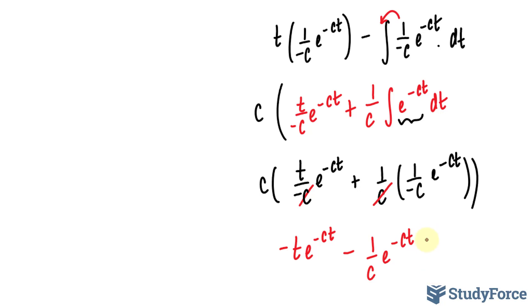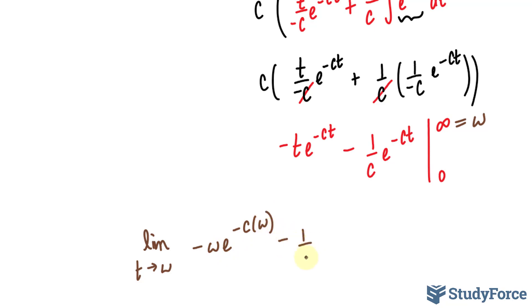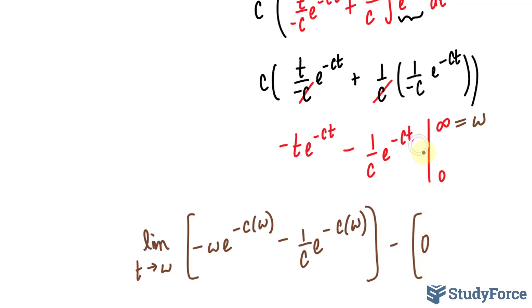Now that integration is finished, I need to evaluate this at infinity and 0. This was an improper integral because of the infinity bound, so I'll replace infinity with an arbitrary value w and take the limit as t approaches w. Replacing all t's with w gives: negative w e to the power of negative c w, minus 1 over c times e to the power of negative c w. Subtracting the evaluation at t equals 0: the first term becomes 0, and the second term gives e to the 0 which is 1, so we subtract negative 1 over c.